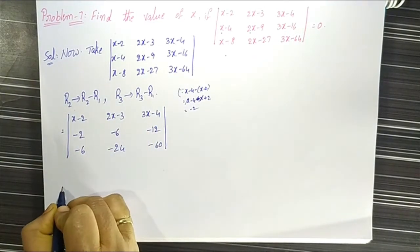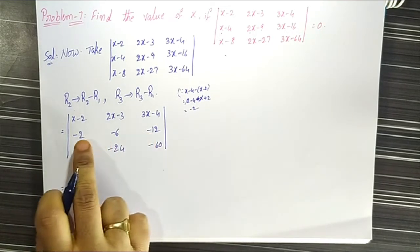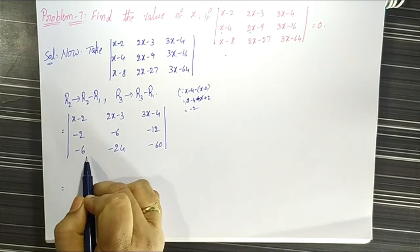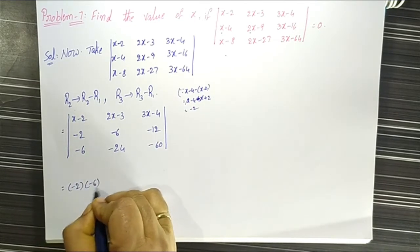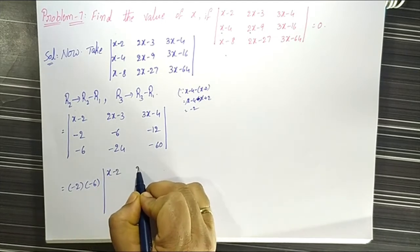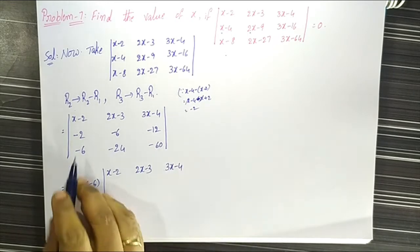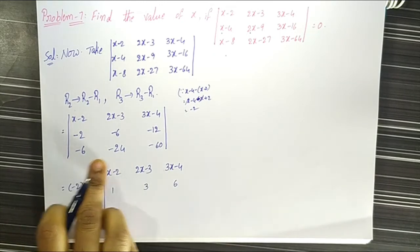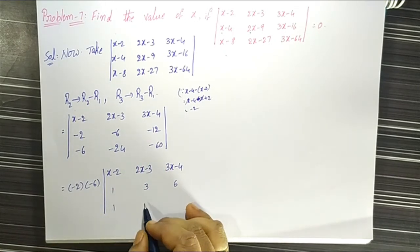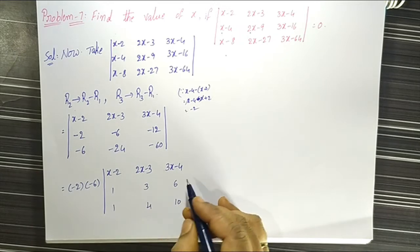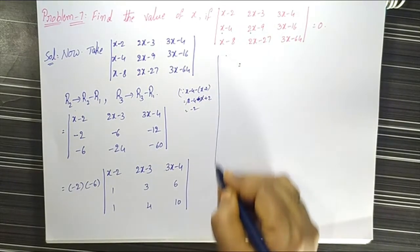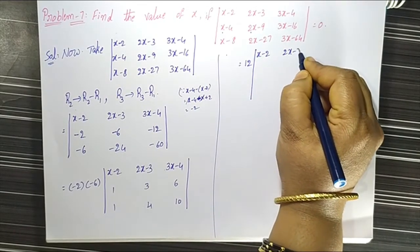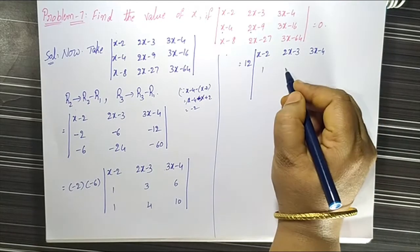In the second row we take out -2 as common, giving 1, 3, 6. In the third row we take out -6 as common, giving 1, 4, 10. So the overall factor is (-2) times (-6) equals 12, times the determinant of x-2, 2x-3, 3x-4; 1, 3, 6; 1, 4, 10.